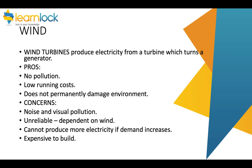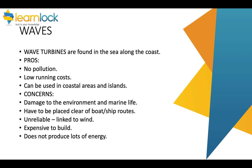Wind turbines have a turbine which turns a generator and makes electricity. Again, no pollution and low running costs because the fuel is wind, and they don't permanently damage the environment. The issues are that people living near them don't like the noise or visual appearance, they're unreliable depending on wind speed, and they cannot produce more electricity if demand increases.